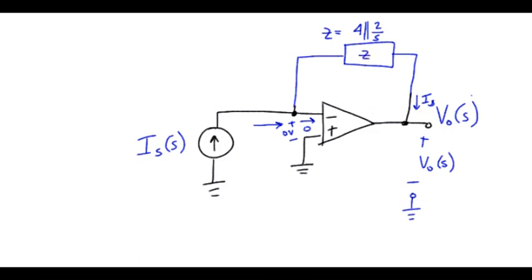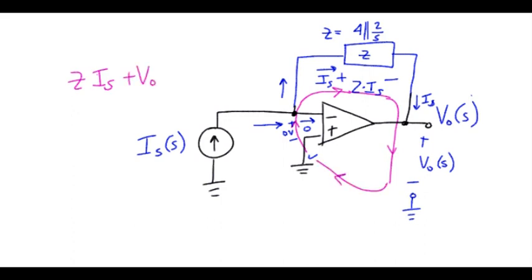So let me call this equivalent parallel impedance Z. So that's the 4 ohm resistor in parallel with 2 over S. Again, we have the current I-S heading this way. So that means the voltage that exists across this combination is Z times that current I-S. So let's go ahead and do a KVL path starting right here at ground. And I see zero volts as I come through here, plus ZI-S plus Vout equals zero. So Vout is minus ZI-S.